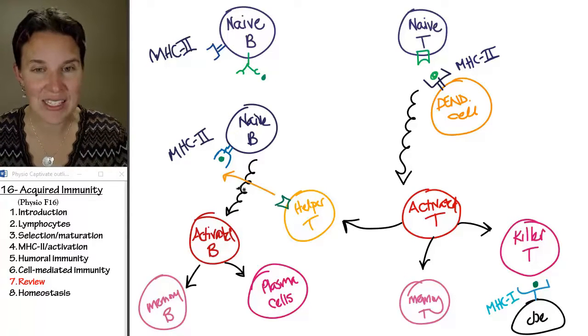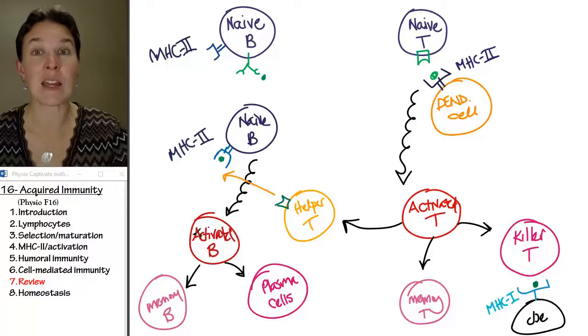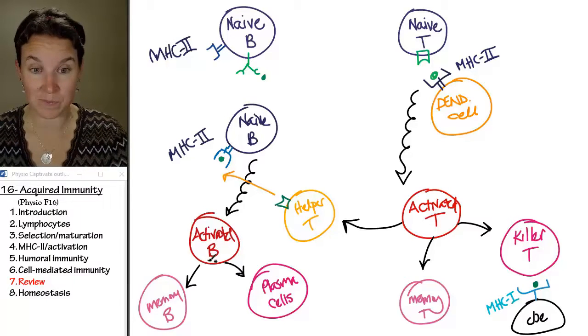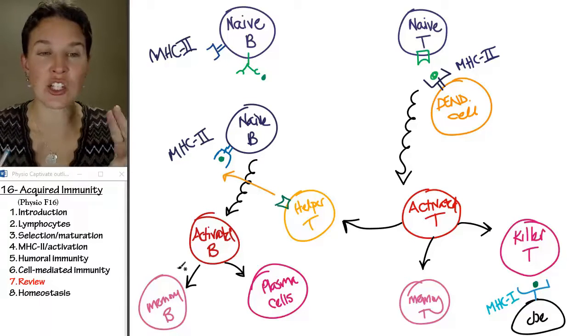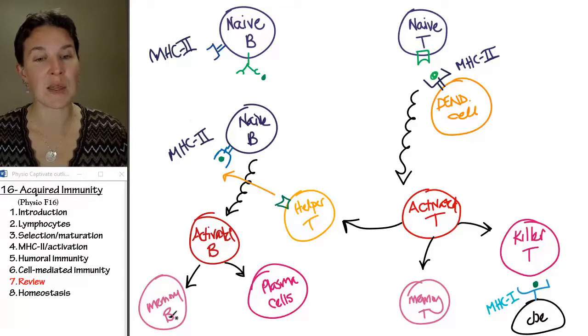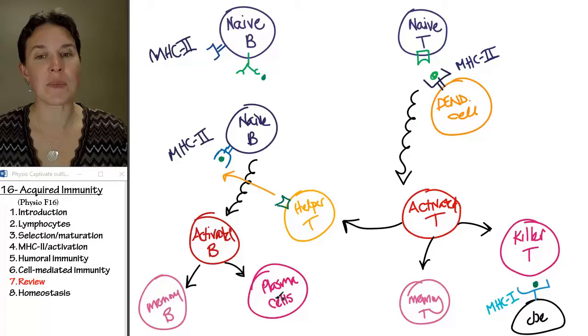That activates the naive B cell, and it becomes an activated B cell. The activated B cell can now differentiate into two types of cells. It can be a memory cell or it can be a plasma cell.